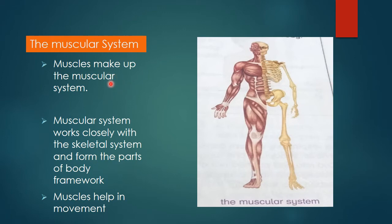The muscular system is made up of muscles. All the muscles in our body together make the muscular system. You know about the muscles and have studied about them in the previous class. The muscles work with the bones, and when they work together they form part of the body's framework. The body's movement is involved with the bones, and muscles help the bones in movement.